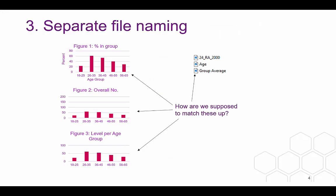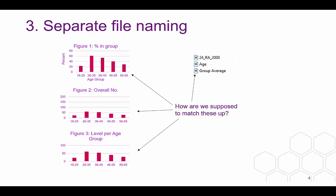Some researchers will include figures in the main output document and will also ask for higher resolution versions to be released alongside the main file. This is okay, but we will need to check all of the files and compare the separate high-res versions with those pasted into the main document. If you need to do this, please give your separate high-res files exactly the same name as the ones pasted into the main document. This will avoid any ambiguity and requests for clarification that will cause delays.